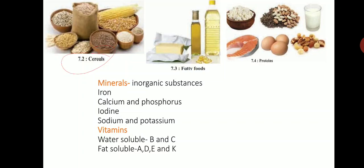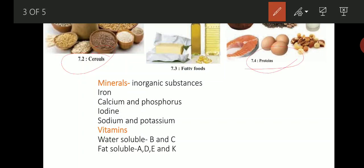The next nutrient group is proteins. The function of proteins is for the growth of our body, repairing wear and tear of the body, and for other life processes. Cells and tissues that are damaged get repaired with the help of proteins. Sources of proteins include sprouts, milk and milk products, meat, and eggs. These macronutrients are required in large quantities by our body.